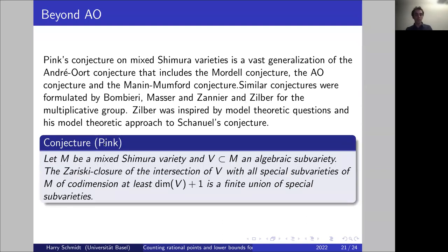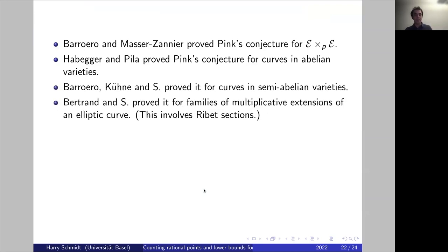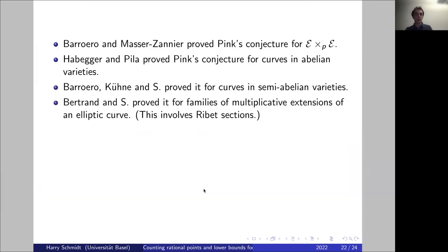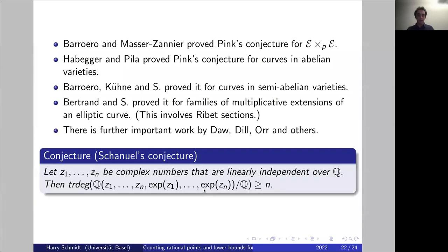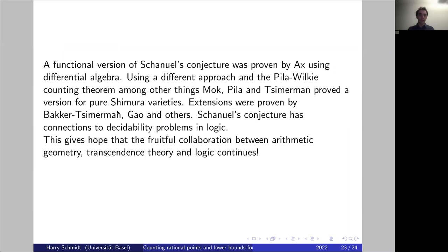Pink's conjecture: if you replace 'special subvarieties of codimension at least dim V + 1' by 'special points', you get exactly the André-Oort conjecture. Cases were proved by Barroero-Masser-Zannier and Habegger-Pila. There are many interesting connections between functional transcendence, transcendence theory, and logic, which have already led to many fruitful collaborations, and I am hopeful this will continue. Thank you very much.